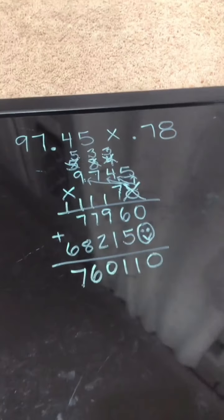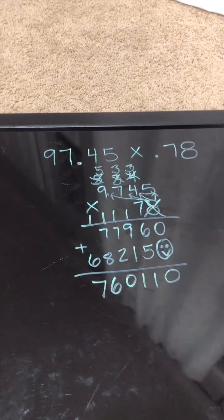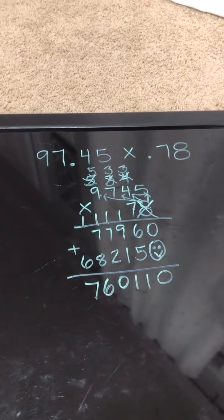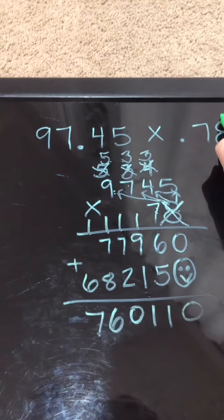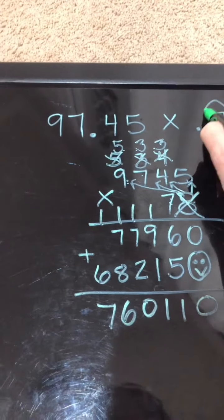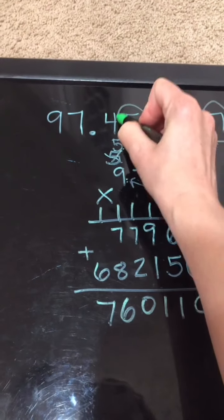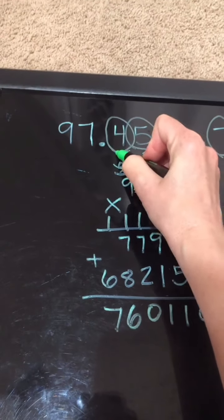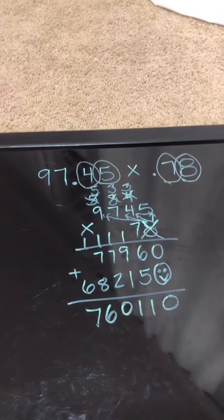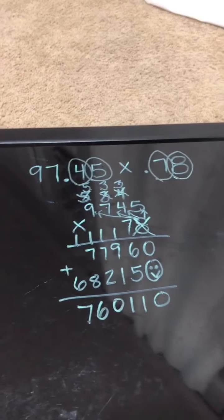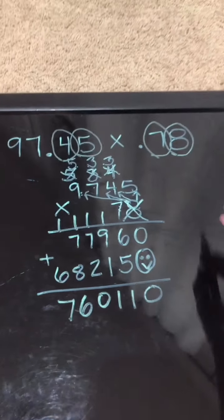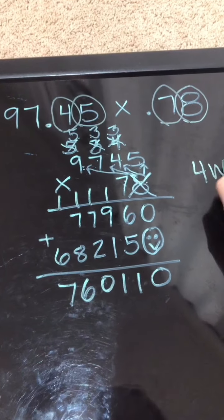But now I'm going to go back and I'm going to circle these numbers behind the decimal. Now the numbers that I circled behind the decimal, that's how many times I do that wave. So I'm going to do 4 waves.